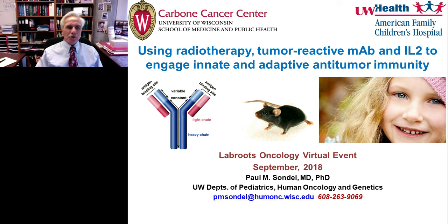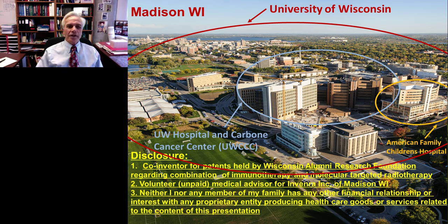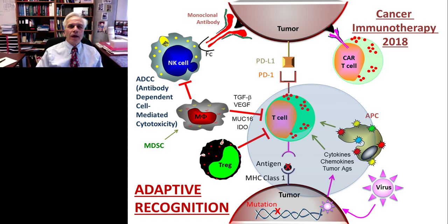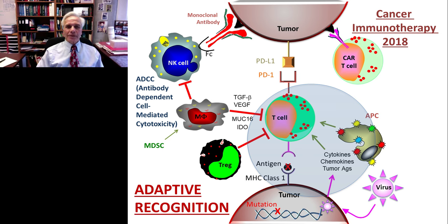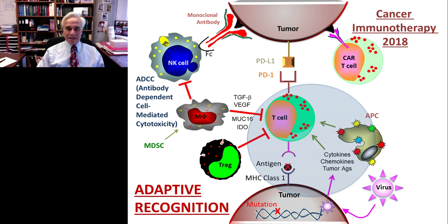Hello, I'm Paul Sondell. Thank you for joining us today. We're going to be focusing on how we can combine various forms of therapy to engage both the innate and adaptive immune systems to have a beneficial anti-tumor effect. I work here at the University of Wisconsin, and I'm involved in a variety of collaborations with no financial conflict of interest. A number of different cell types are involved in cancer immunotherapy, and the major clinical focus is on the adaptive component — turning on T cells' ability to recognize tumor peptides presented by MHC molecules on tumor cells to destroy them. This approach has had quite a bit of success in select cancers.